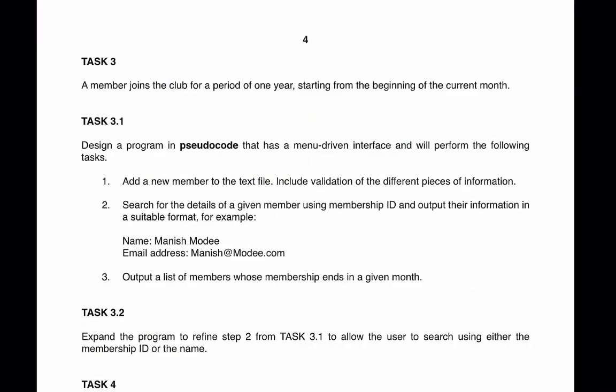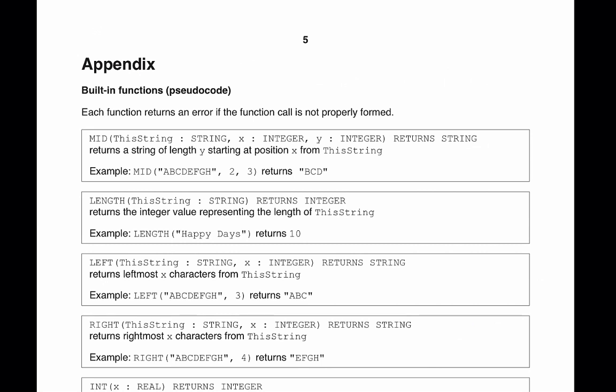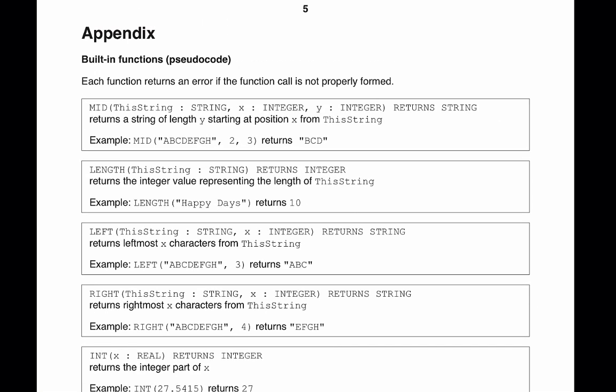back to our PRM and see if there's any function that we could use to check the length. So for checking the length, we have this function called 'length' that returns an integer value. We could pass membership ID as an argument or parameter, and the return value would be 4